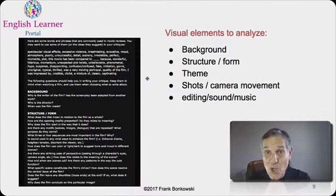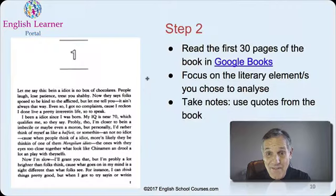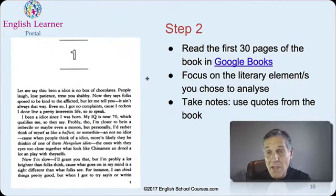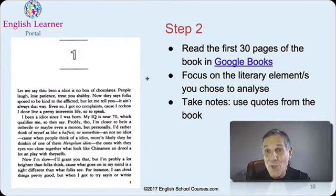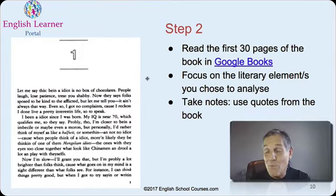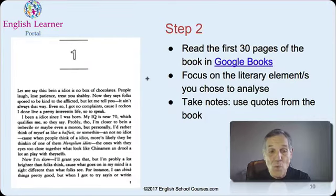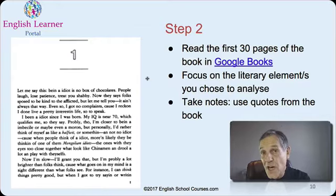In step two of the activity, I recommend asking students to read the first 30 pages of the book on Google Books — a great site to add to their appreciation of the story. In step three, they focus on one or two literary elements such as character or setting, examining how they connect together, taking notes and writing down quotes from the book to support their analysis.